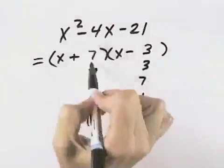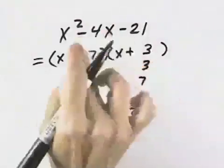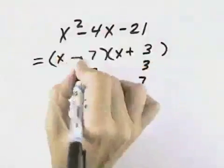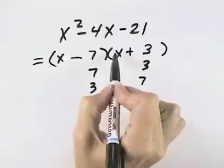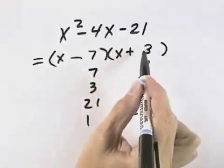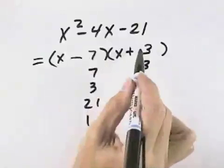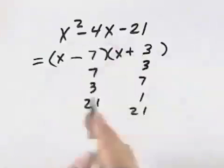Since we want negative 4, that means the 7 and the 3 is the correct combination, but that we need to reverse those signs, so that the inner term is negative 7x now, and the outer term is positive 3x. So negative 7x plus positive 3x is negative 4x.